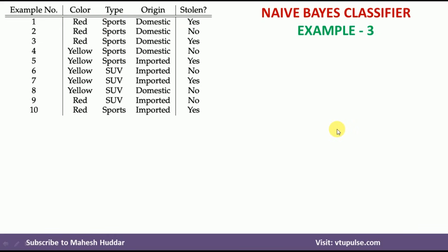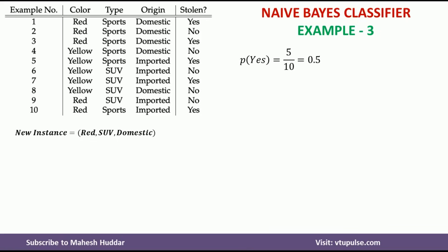First, what we do is calculate the prior probability of this particular dataset — that is, the probability of yes and probability of no. To calculate the probability of yes, we count how many yes examples there are: 1, 2, 3, 4, and 5. So out of 10, there are 5 yes examples. The probability of yes is 5 by 10, which is equivalent to 0.5.